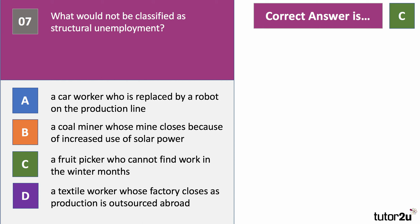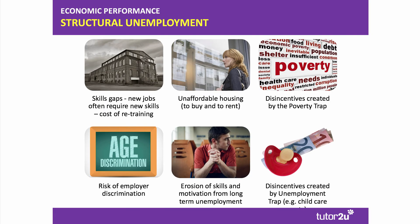Structural unemployment is caused by changes in the pattern of demand for labor in different industries, and is often caused by both geographical and occupational immobility of labor, as well as disincentives perhaps created by the welfare system. Employer discrimination can also mean some workers are frozen out of certain types of work. The longer somebody is unemployed, the harder it is for them to get back into work — hence the problem of skills erosion or atrophication for the long-term unemployed.